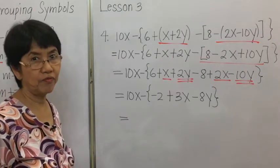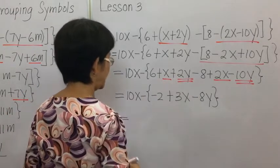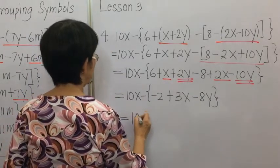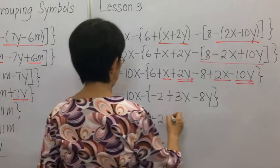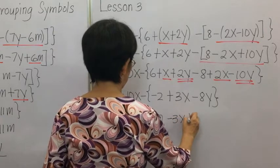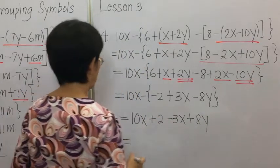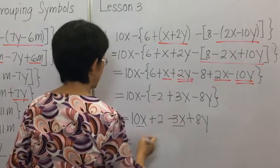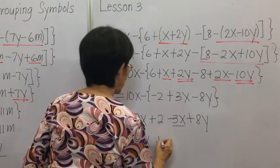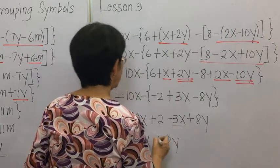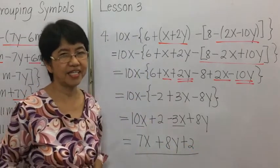We remove the braces, which are preceded by a negative sign, so we change the signs inside. Combining all like terms: 10X minus 3X gives 7X, plus 8Y plus 2. That is our final answer for example 4.